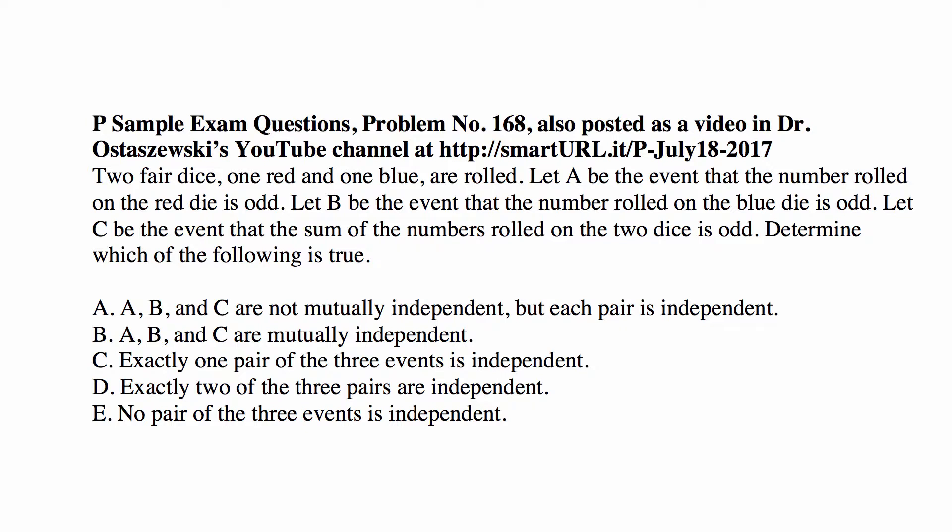Determine which of the following is true. A says A, B, and C are not mutually independent, but each pair is independent. B says A, B, and C are mutually independent. C says exactly one pair of the three events is independent. D says exactly two of the three pairs are independent. And E says no pair of these three events is independent.